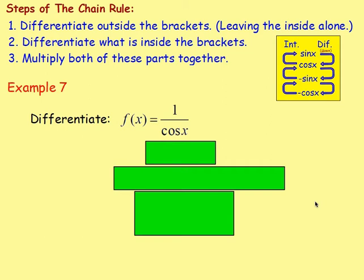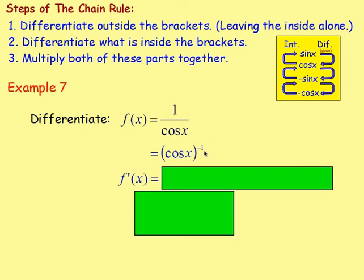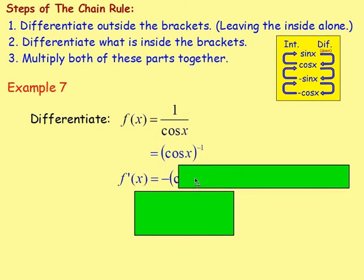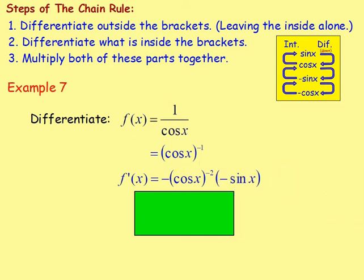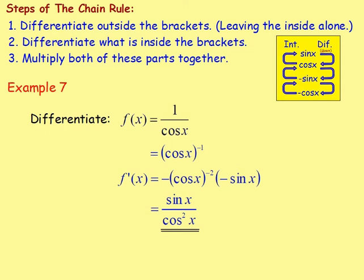Example 7: differentiate f(x) equals 1 over cos x. You'd have to move the cos x up to the top line. Imagine cos x in brackets — it's cos x to the power of 1 — move it up to the top line and you'd have cos x to the power of negative 1. Now we can differentiate: f'(x) — bring the power down, take one off the power — so negative 1 times cos x to the power of negative 2, multiplying by the derivative: differentiate cos x and you get negative sine x. The two negatives cancel out, giving sine x times cos x to the power of negative 2. Writing with a positive index, move cos x to the power of negative 2 to the bottom: sine x over cos² x.